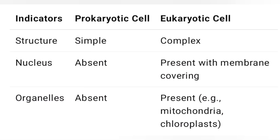Prokaryotes and eukaryotes — difference. Structure: prokaryotic cell is simple; eukaryotic cell is complex. Nucleus: prokaryotic cells have no membrane-bound nucleus, while eukaryotic cells have a nucleus present with a membranous covering.